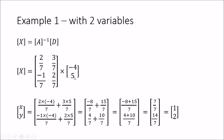Now we multiply A⁻¹ by the constant matrix D. We compute [2/7, 3/7, -1/7, 2/7] times [-4, 5]. This gives 2/7 times -4 plus 3/7 times 5, and -1/7 times -4 plus 2/7 times 5. Simplifying: 7/7 and 14/7, which gives x = 1 and y = 2. This is how you solve a set of two equations using matrices.